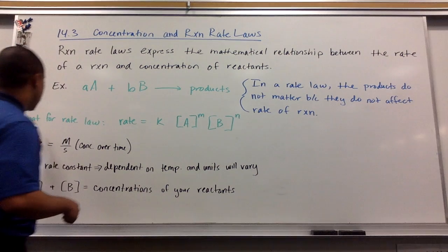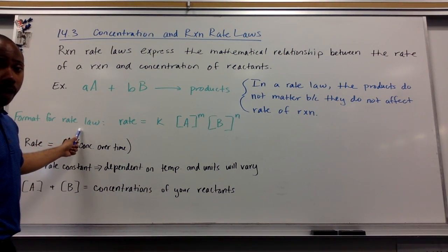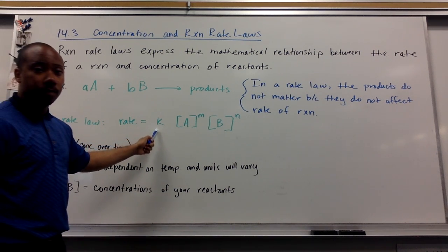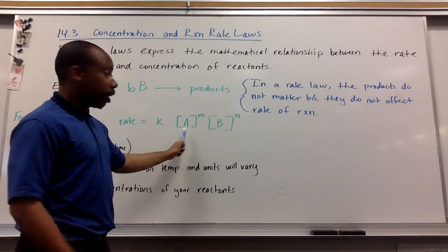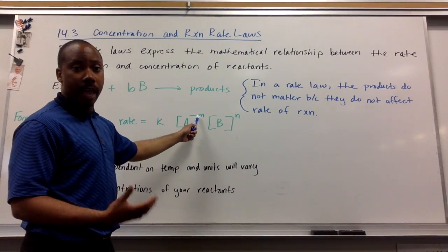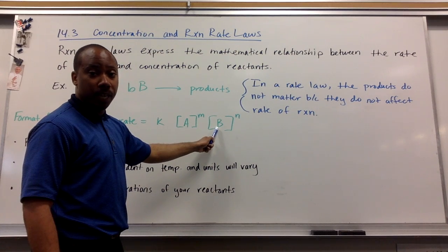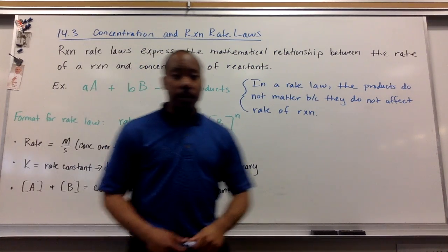Now, the format of a rate law is pretty simple. It's the same every single time. It's that the rate equals some constant K times the concentration of one of your reactants raised to a power of M, we'll talk about what M is, times the concentration of your other reactant B raised to a power of N. Now, let's break down what these things mean.